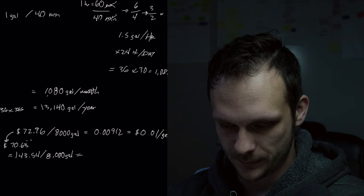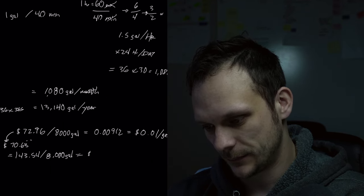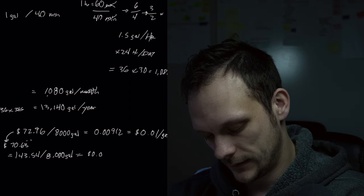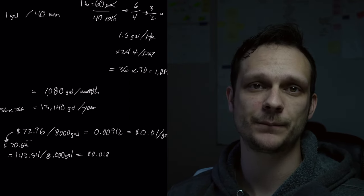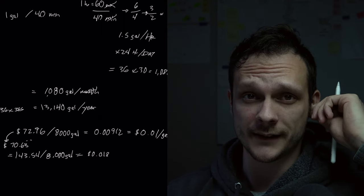So we take our other numbers, and if we add these two numbers together, we are going to get 143.54. And we divide that number by 8,000 gallons. So this is considering the cost of our water and sewer as the cost of our water. Then we end up at, round up, it's about 0.018 cents, so almost two cents per gallon. So that we know then is our price of water.